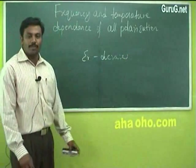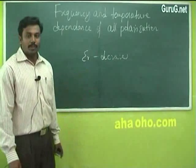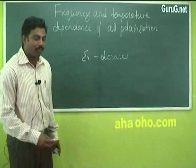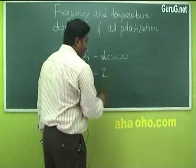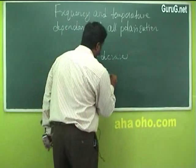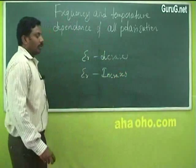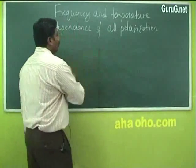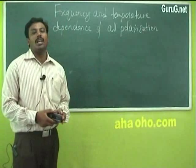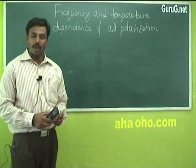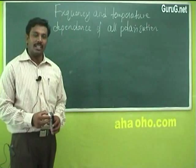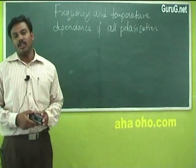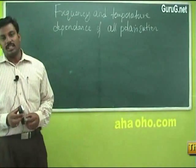Whereas in the case of space charge polarization, when the temperature is increased, a large number of diffusions take place and the dielectric constant epsilon_r increases. So to summarize: for orientation polarization, when temperature is high, epsilon_r decreases; whereas for space charge polarization, when temperature is increased, epsilon_r also increases.